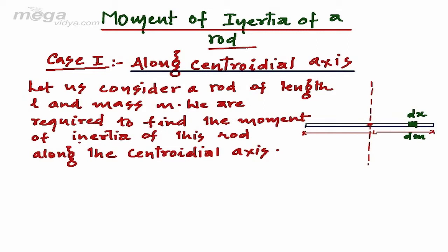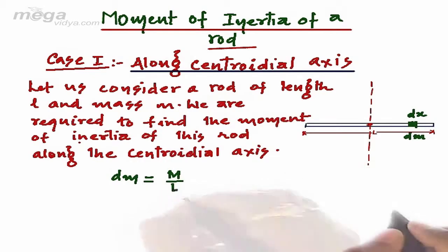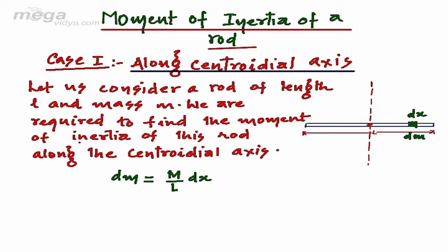We can calculate the elementary mass using a very simple method. dm can be given as equal to M upon L, that is the mass per unit length, into dx. Since mass is equally distributed along the rod, we can take dm as M upon L into dx.